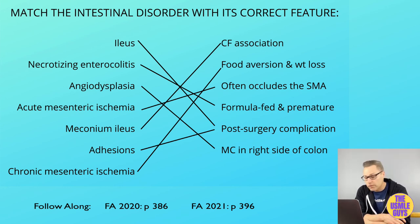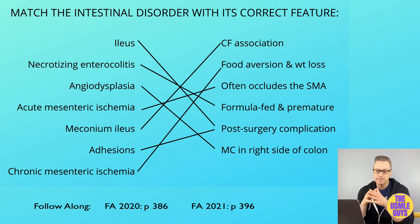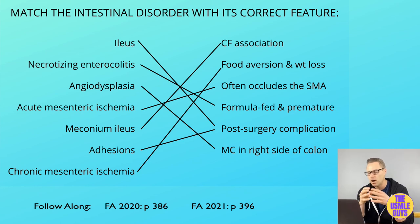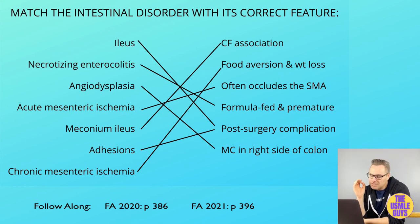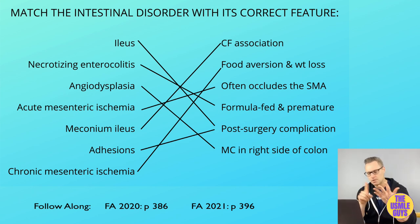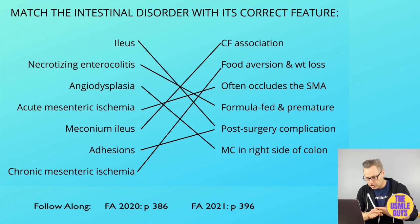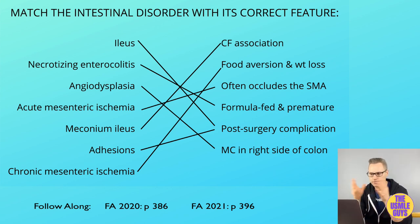Colonic ischemia is caused by ischemia to the watershed areas of the colon — the splenic flexure and the rectosigmoid junction. It presents with crampy abdominal pain followed by hematochezia, and imaging shows the classic thumbprint sign indicating mucosal edema. Ileus is intestinal hypomotility without obstruction — the bowels stop propelling contents forward. Patients show constipation, decreased gas, abdominal distension, and decreased bowel sounds. Common causes include opiate use and recent surgery. Management involves bowel rest, electrolyte correction, and cholinergics if needed.